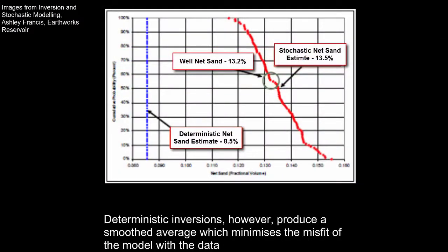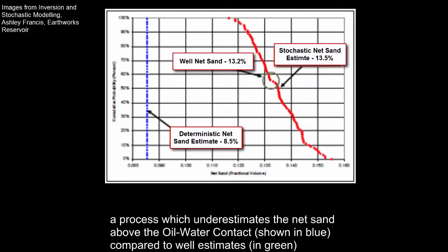Deterministic inversions, however, produce a smoothed average which minimizes the misfit of the model with the data, a process which underestimates the net sand above the oil-water contact, shown in blue, compared to well estimates, in green.